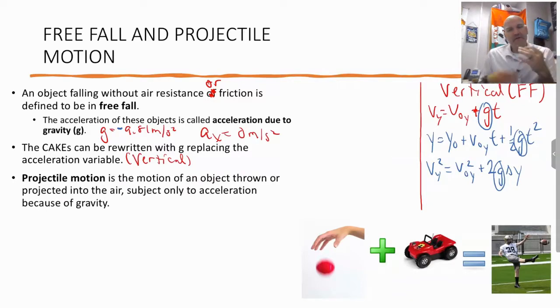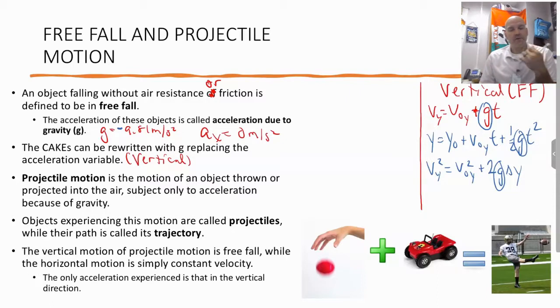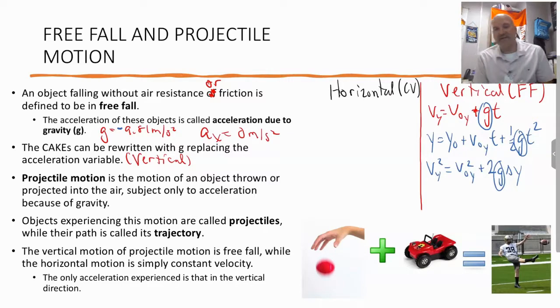Now, projectile motion is essentially free fall, but adding in a constant velocity motion as well. Projectile motion, motion of an object thrown or projected into the air, subject only to acceleration because of gravity. Objects experiencing this motion are called projectiles, while their path is called a trajectory. So a football, baseball, like kicking a football, hitting a baseball, throwing a baseball, bow and arrows, those are all what we call projectiles. Now, the vertical motion of projectile motion is free fall, and the horizontal motion is simply constant velocity. So the only acceleration will be experienced in the vertical direction.